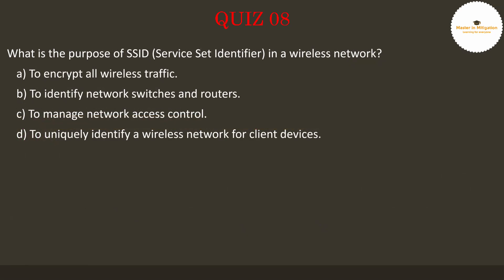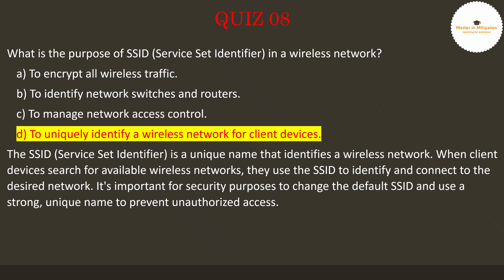Let's go to question 8: What is the purpose of SSID (Service Set Identifier) in a wireless network? Pause the video now to select the best answer. The answer is D: to uniquely identify a wireless network for client devices. The SSID (Service Set Identifier) is a unique name that identifies a wireless network. When client devices search for available wireless networks, they use the SSID to identify and connect to the desired network. It's important for security purposes to change the default SSID and use a strong, unique name to prevent unauthorized access.